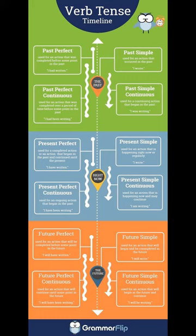For example, 'I have written a book.' Present simple, used for an action that is happening usually or regularly — for example, 'I write a book.' Present perfect continuous, used for an ongoing action that began in the past — for example, 'I have been writing a book.' Present simple continuous, used for an action that is happening now and may continue — for example, 'I am writing a book.'